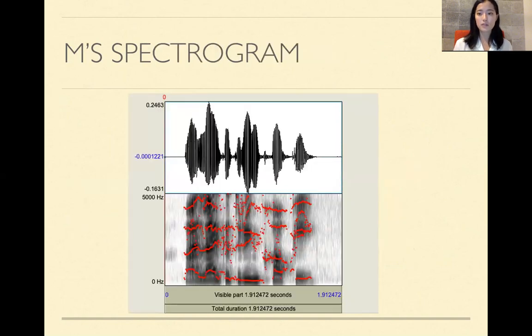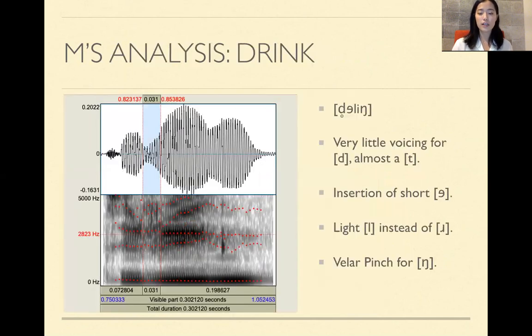So again, this is M's spectrogram of the entire sentence. 'I like drink coffee.' So this is her drink. So there's very actually, I found that there was very little voicing for /d/. And it was almost like a /t/ by itself, which you'll hear later on. And there was an insertion of a short vowel right next to the burst. And it was a very short /u/, which we'll hear separately in a bit. And this highlighted portion is the /l/, the /l/ is shown on the highlighted portion. I determined it to be a light /l/ instead of rhotic. And we'll get more on that with the analysis later. And you can also see her velar pinch for the /ŋ/.